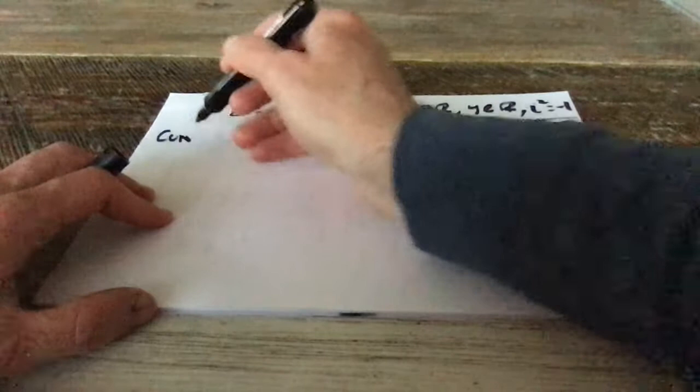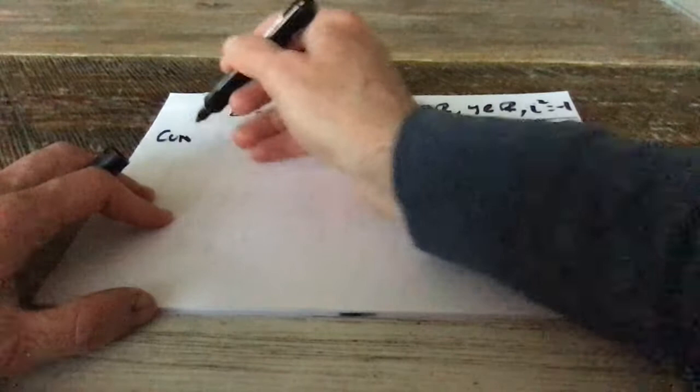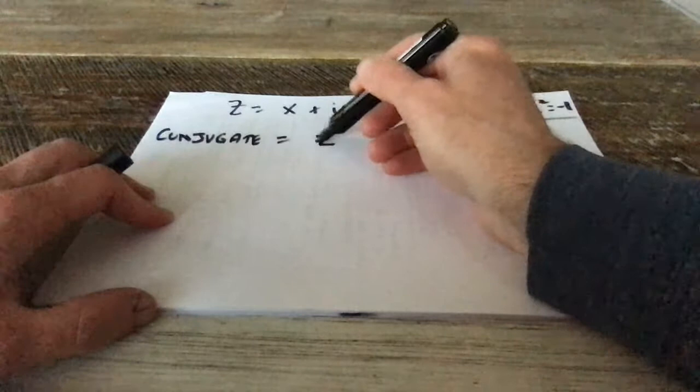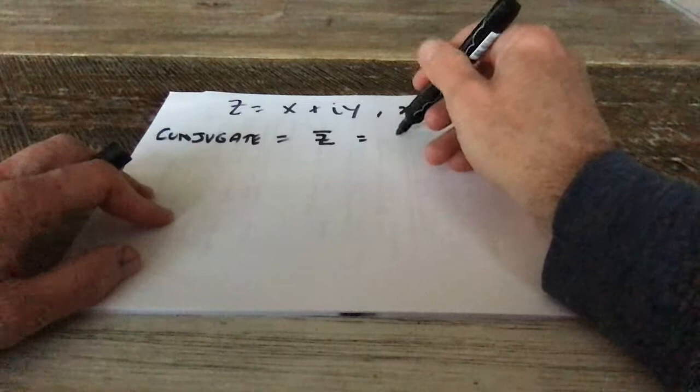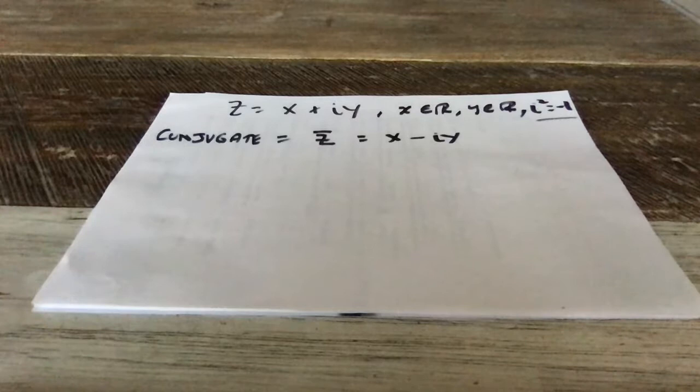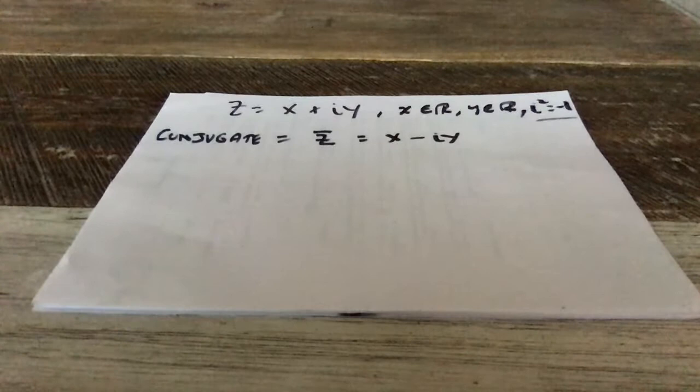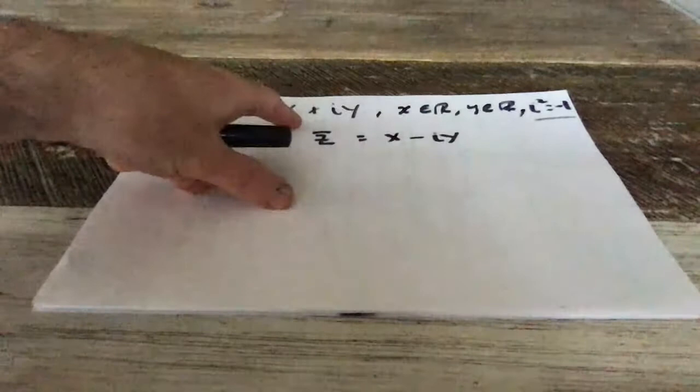And the complex conjugate has its own notation. It's z bar. And all it is, if this is z, z bar, then, is x minus iy. So what you get, essentially, is you get two complex numbers for the price of one equation. And they're naturally associated with one another. And you have this natural structure. If this is the solution to a quadratic equation, the conjugate is also a solution to the quadratic equation, which is really, really nice.